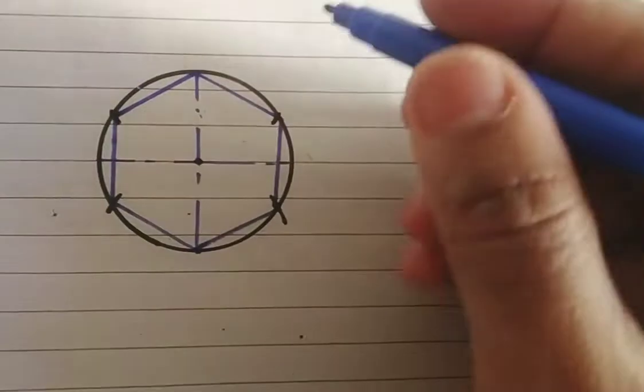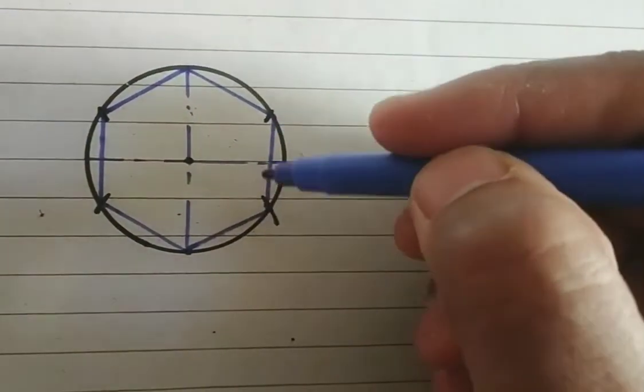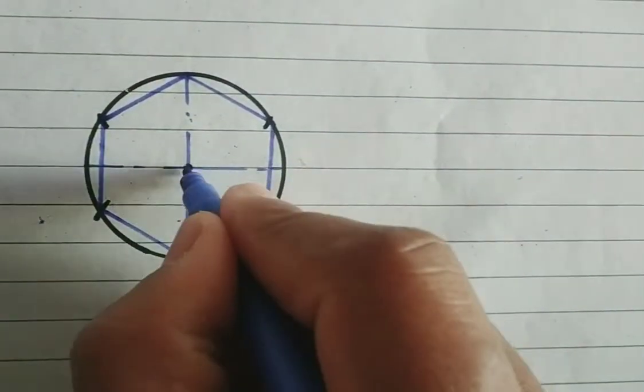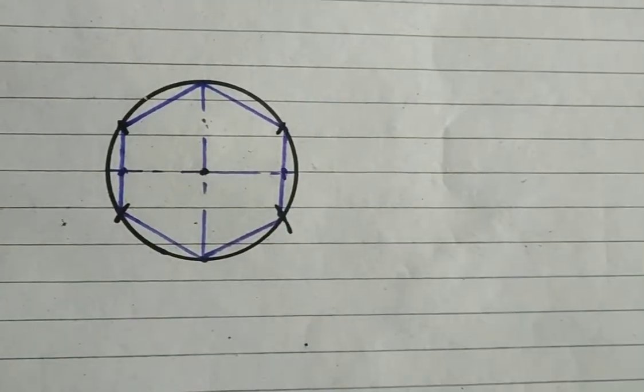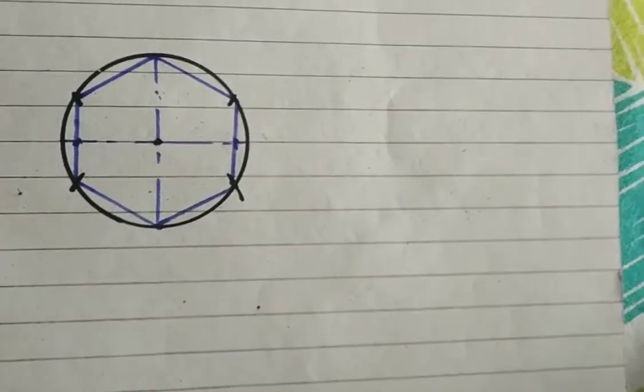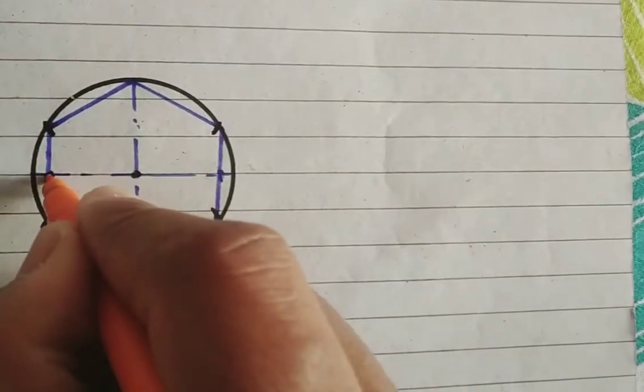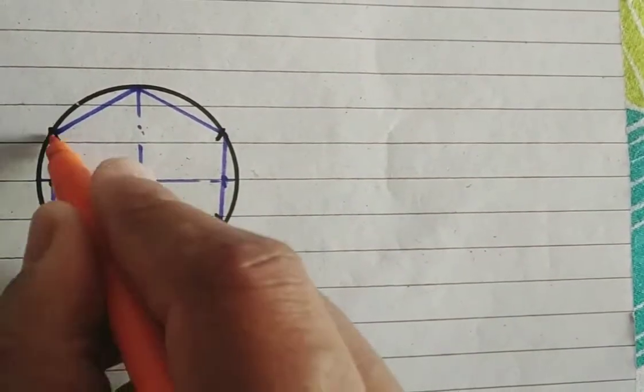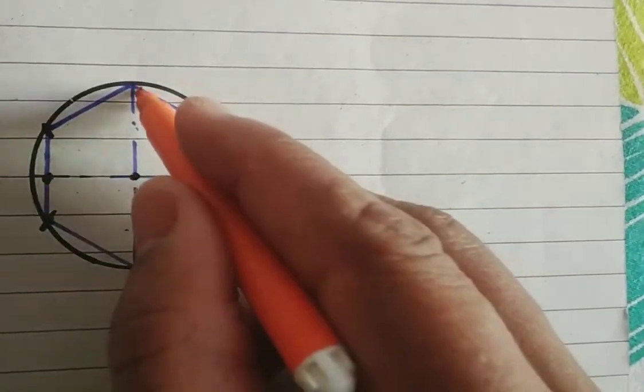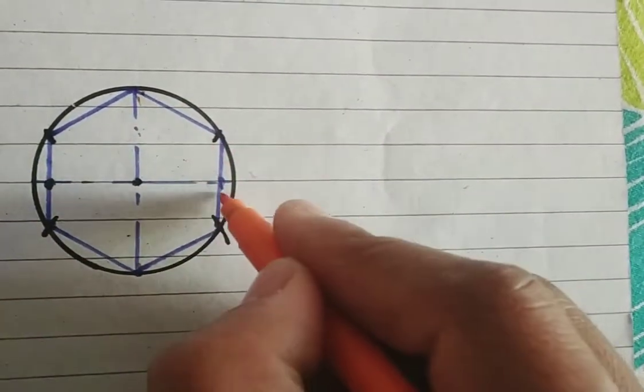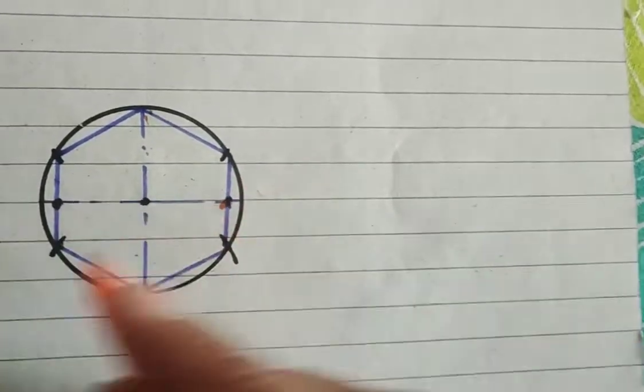The next step is to draw perpendiculars from each corner of the hexagon which intersect the diagonal of the circle at points which are the precision positions.